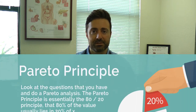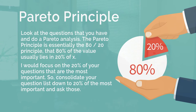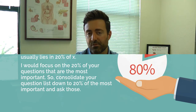What I'd recommend you do instead is take a deep breath before your visit, look at the questions that you have, and do a Pareto analysis. The Pareto principle is essentially the 80-20 principle — that 80% of the value usually lies in 20% of X. I would focus on the 20% of your questions that are the most important, consolidate your question list down to that 20% and ask those.